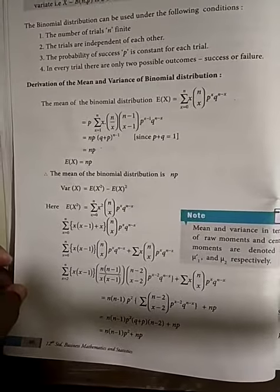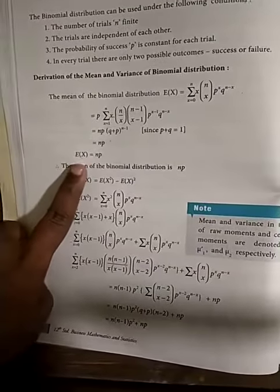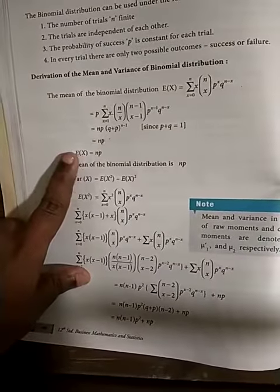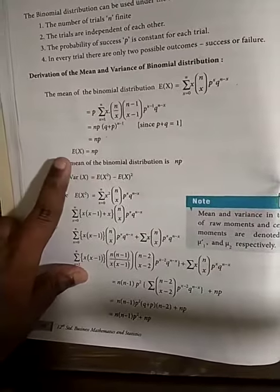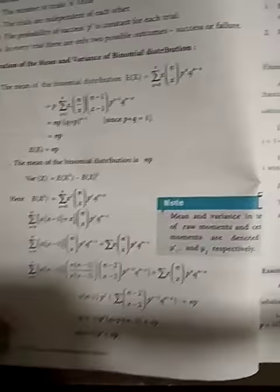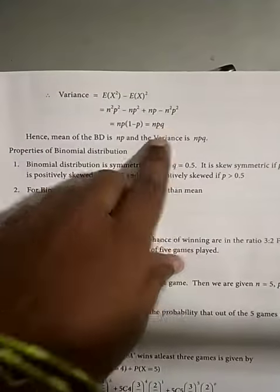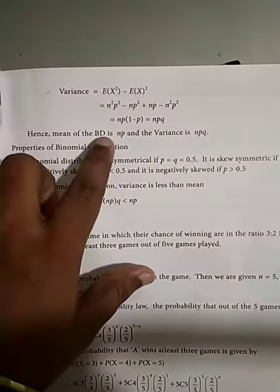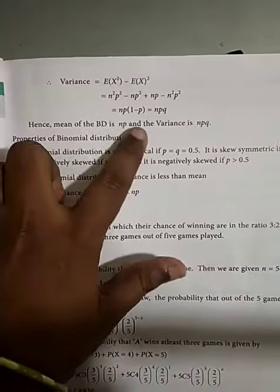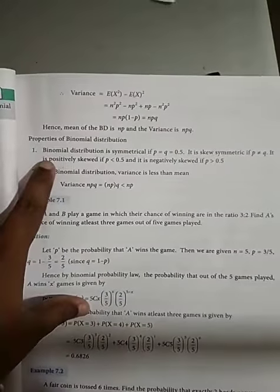When you work it out, you will understand how we get the mean. The mean for a binomial distribution is np, and the variance is npq.